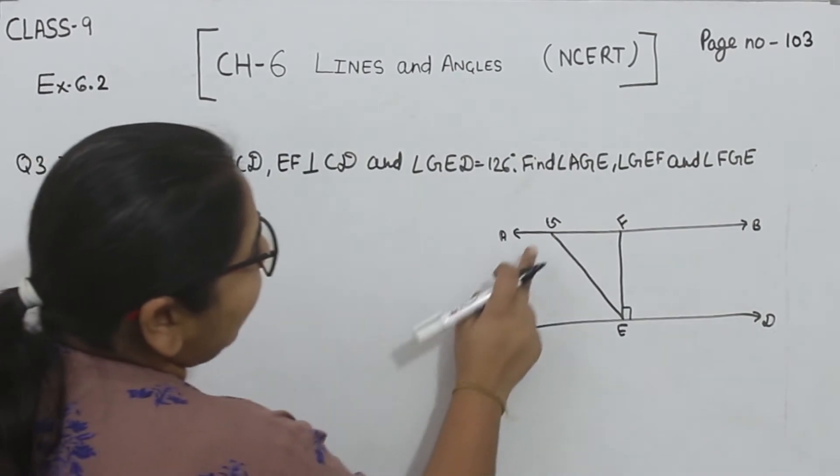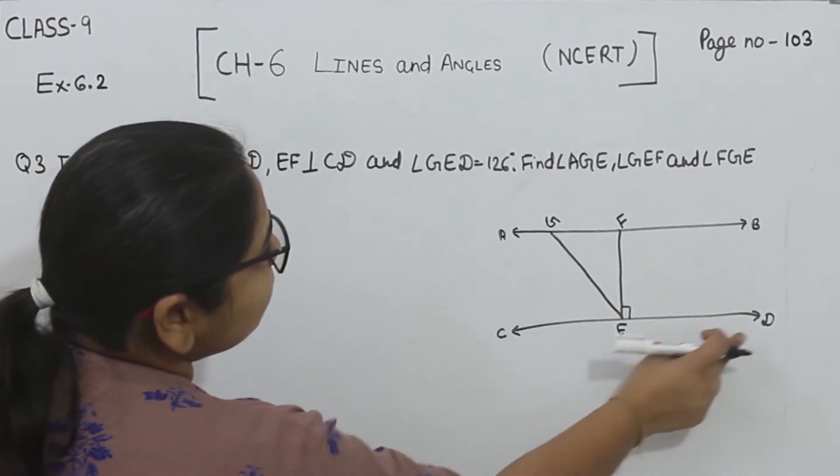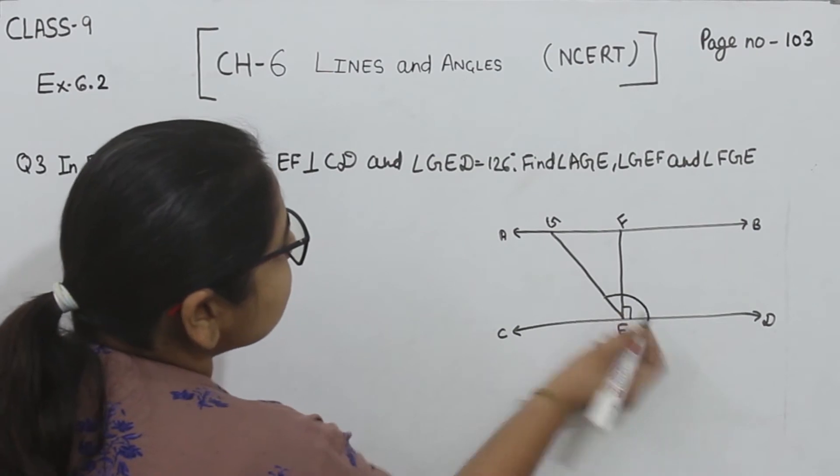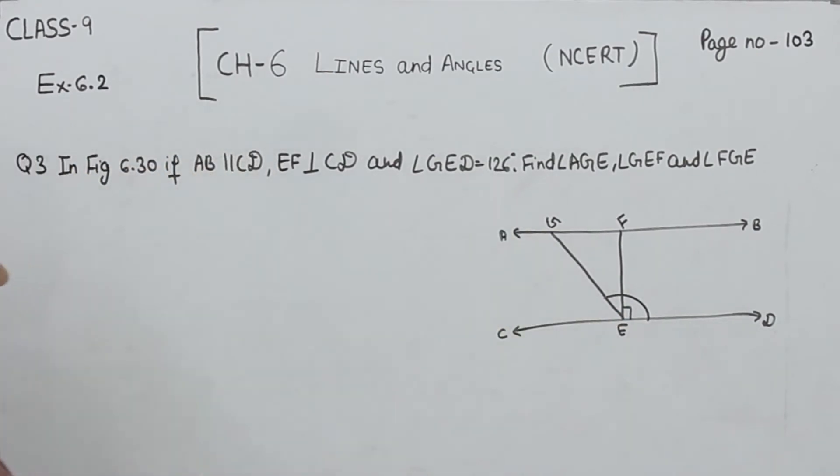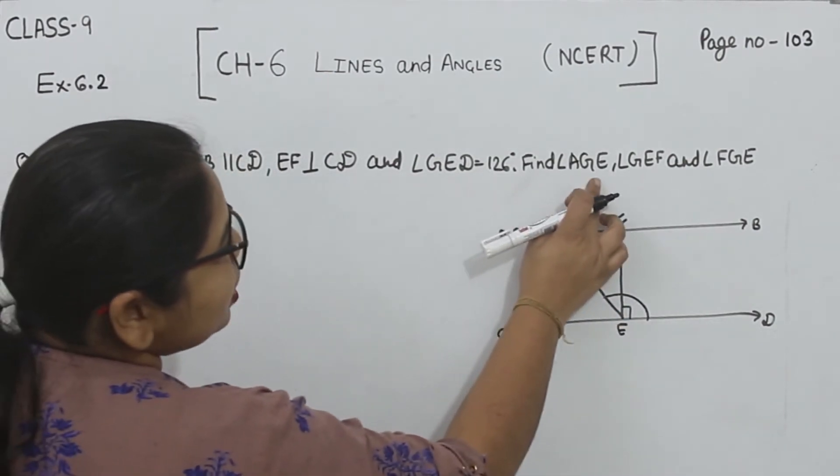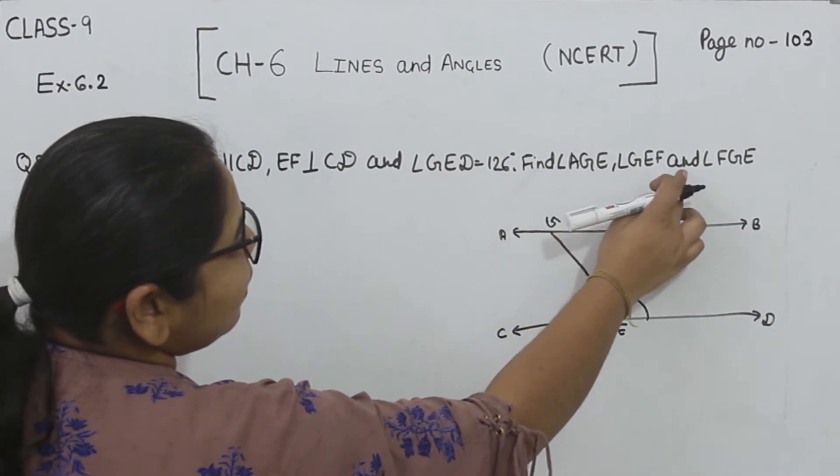Angle GED is equal to 126 degrees. Now find angle AGE, angle GEF, and angle FGE.